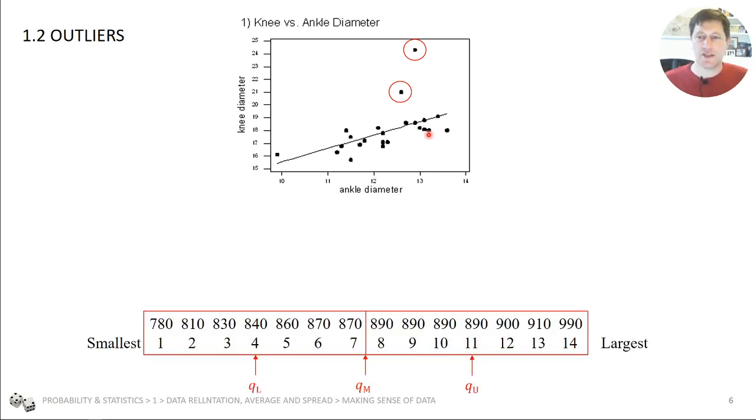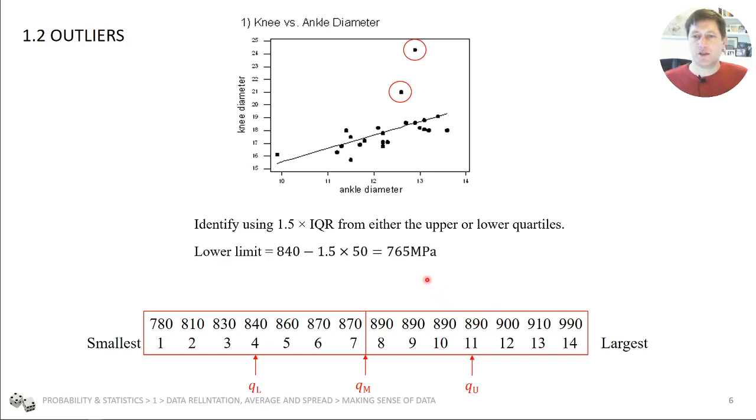So, first of all, let's take the definition of this. So, a common definition is to say that an outlier is something that is more than 1.5 times the interquartile range from either the upper or lower quartiles. So, the interquartile range was this amount here, 50 MPa. This is the upper quartile, so 1.5 times 50 is 75. So, if we are more than 75 MPa above this value, then it would be an outlier. So, we can see that. The lower limit is 765. Well, our lowest value is more than 765 MPa, so this isn't an outlier by that definition.